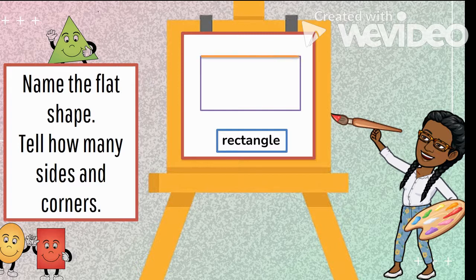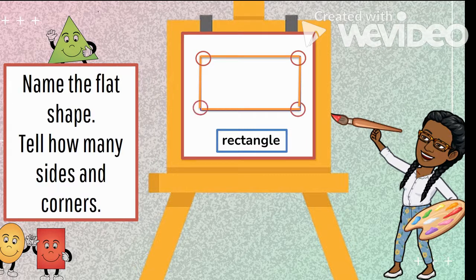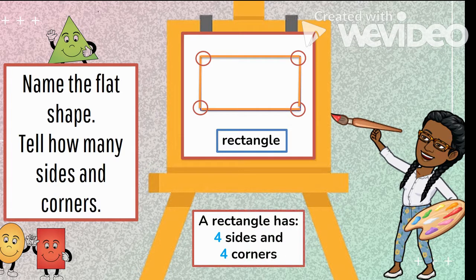A rectangle has one, two, three, four sides. And now let's count the corners. One, two, three, four corners. Let us read what it says. A rectangle has four sides and four corners.